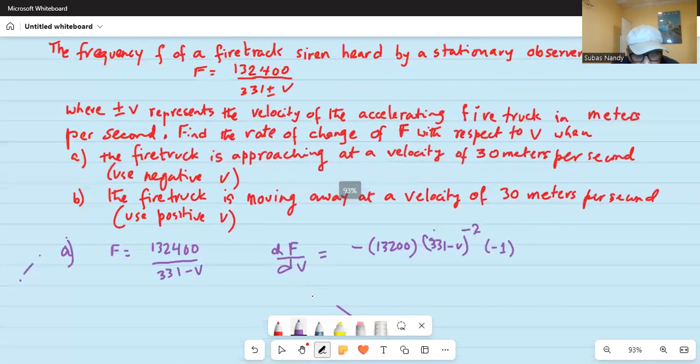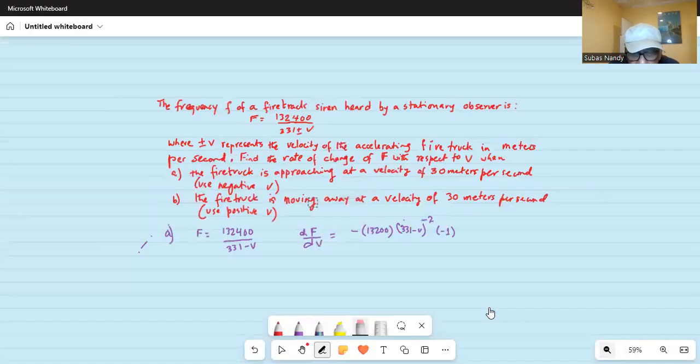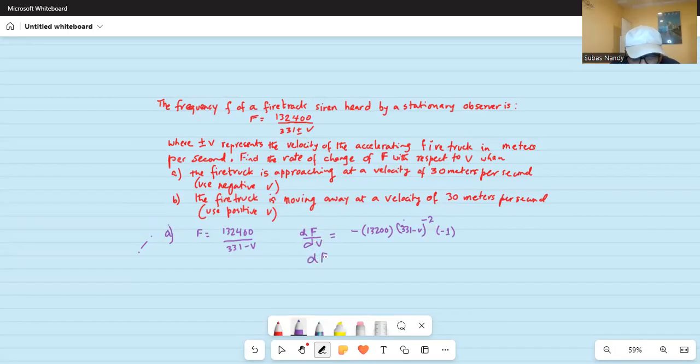So, it becomes df by dv is equal to two minuses make it positive 132,000 divided by 331 minus v, the exponent minus 2, when moved to the denominator will become positive.